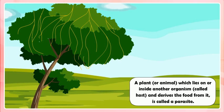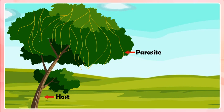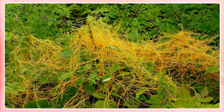Parasites. A plant or animal which lives on or inside another organism called a host and derives food from it is called a parasite. An example of a parasitic plant is the cuscuta. A cuscuta plant does not have chlorophyll — as we can see from the picture, it is yellow in color. Therefore, it cannot synthesize its own food. It takes ready-made food from the tree or plant on which it climbs.